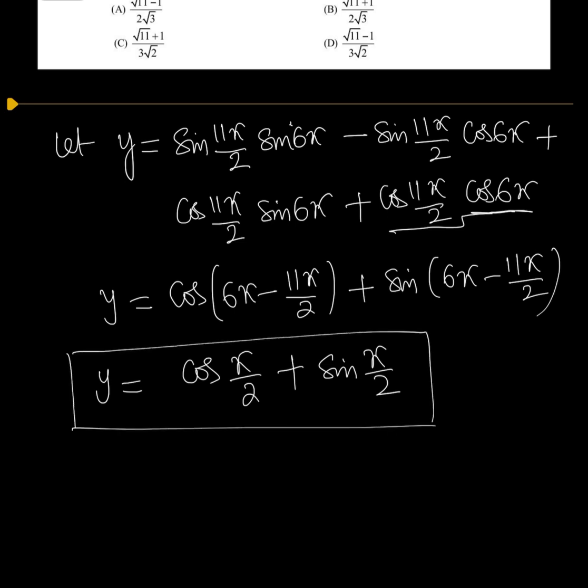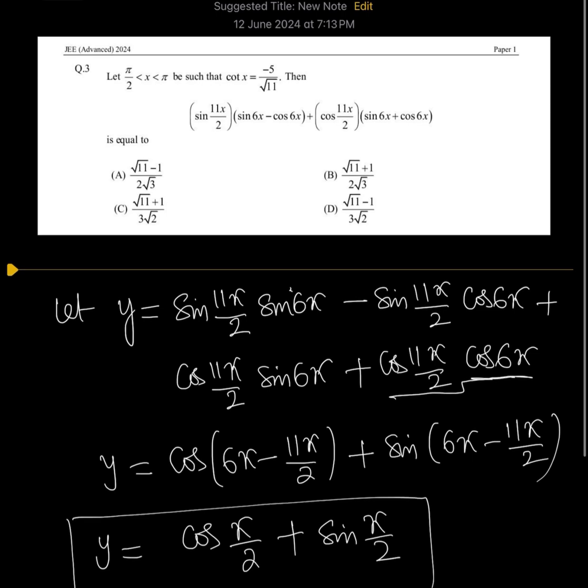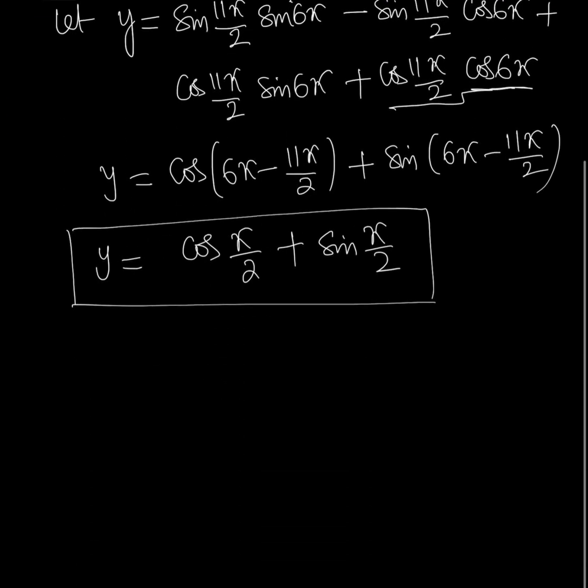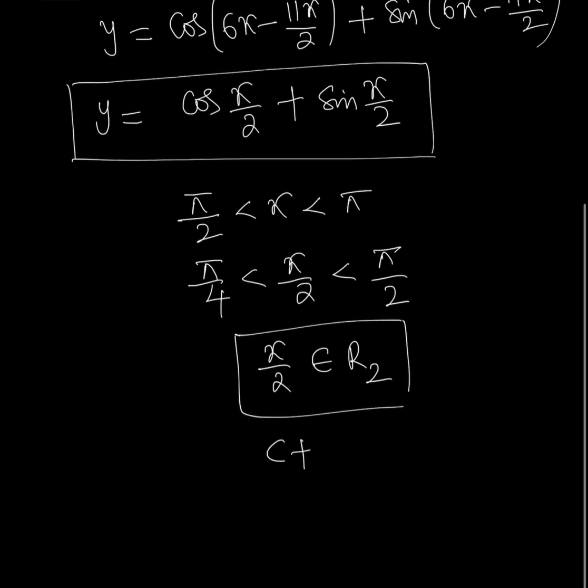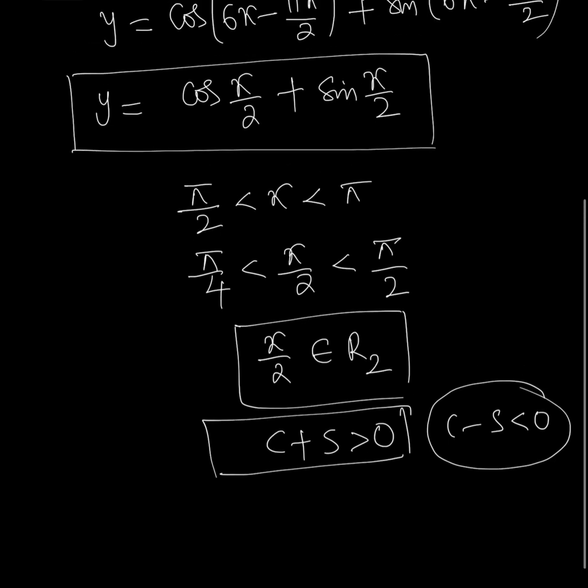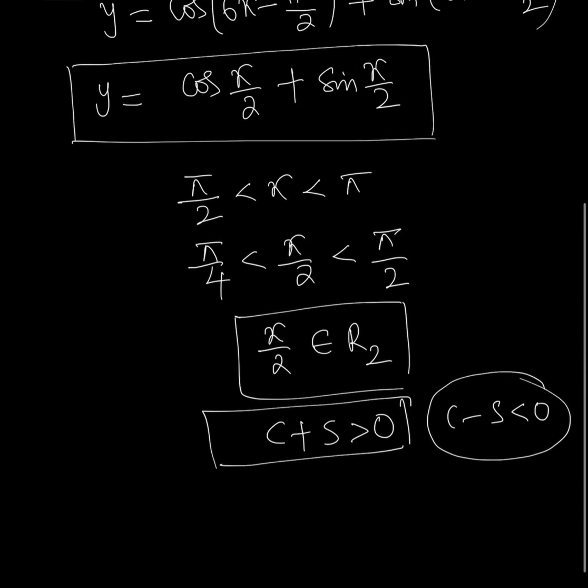From the given interval π/2 < x < π, dividing by 2 gives π/4 < x/2 < π/2, which indicates the second quadrant. So x/2 belongs to Q₂, where cos + sin is always greater than 0, which is a very important condition. Also, cos - sin is less than 0.